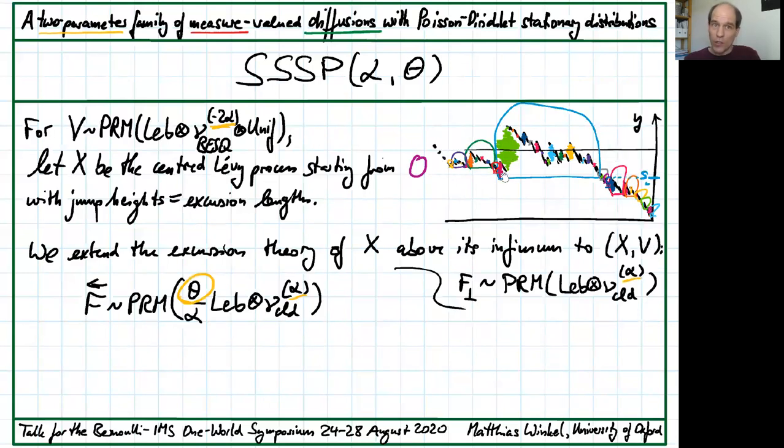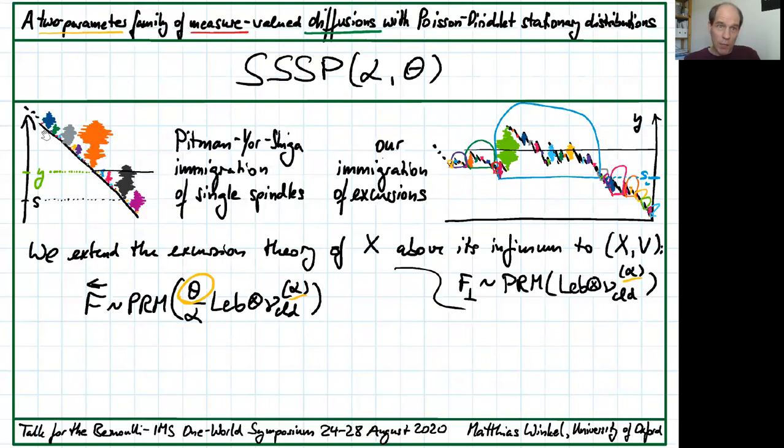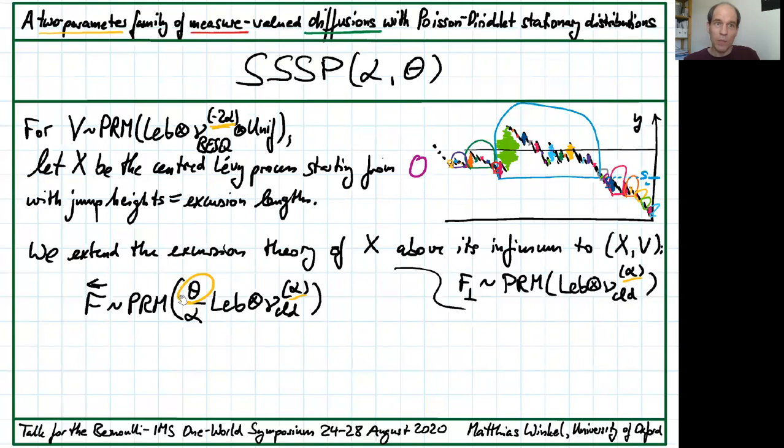Such marked excursions are what we use to replace the Pitman or Shiga immigration which were individual spindles. So we add entire excursions, excursions above the minimum instead of single spindles. The natural immigration rate is alpha here but as with any Poisson random measure we can vary the intensity in this Poisson random measure of marked excursions to achieve any positive rate theta.